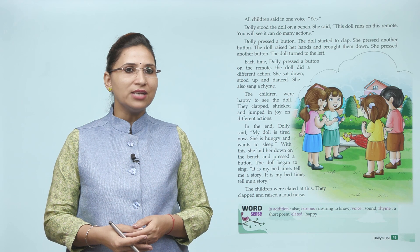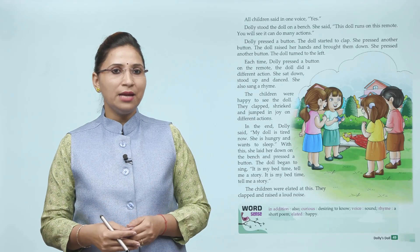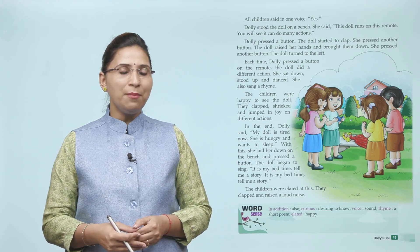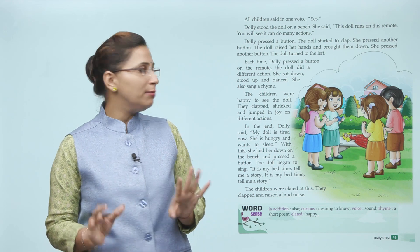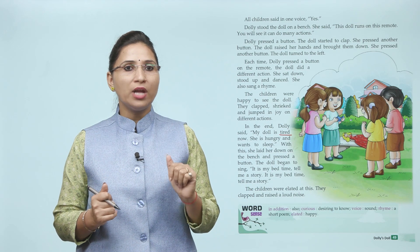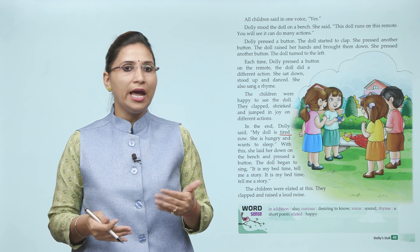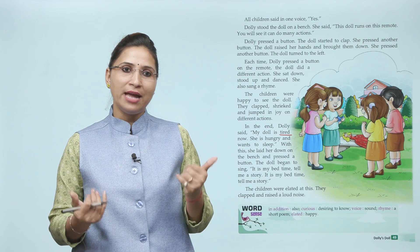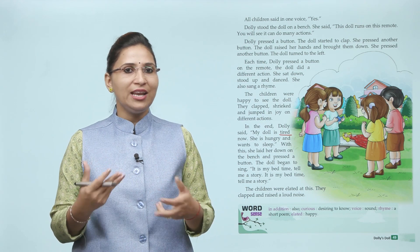In the end Dolly said: My doll is tired now — she is hungry and wants to sleep. With this, she sat her down on a bench and pressed a button. The doll began to sing: It is my bed time, tell me a story. The children were elated at this — they clapped and raised a loud noise. Dolly bolti hai ab meri jo doll hai wo tired ho chuki hai, thak chuki hai, aur bhookhi bhi ho chuki hai, aur isko ab sona hai. Toh bench pe bitha deti hai aur button press karti hai, aur doll kehti hai: it is my bed time, tell me a story. Toh bachche aisa dekh kar bahut khush hote hain aur clap karne lag jate hain.